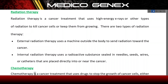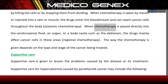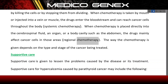Chemotherapy is a cancer treatment that uses drugs to stop the growth of cancer cells, either by killing the cells or by stopping them from dividing. When chemotherapy is taken by mouth or injected into a vein or muscle, the drugs enter the bloodstream and can reach cancer cells throughout the body — systemic chemotherapy. When placed directly into the cerebrospinal fluid, an organ, or a body cavity such as the abdomen, the drugs mainly affect cancer cells in those areas — regional chemotherapy. The way chemotherapy is given depends on the type and stage of the cancer being treated.